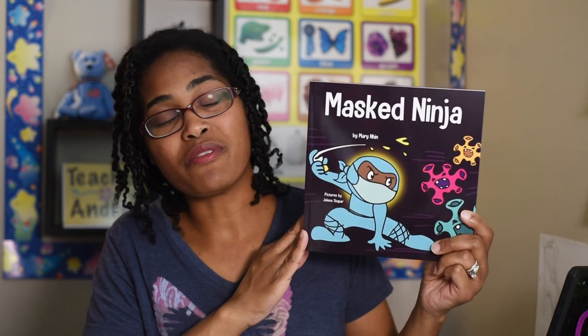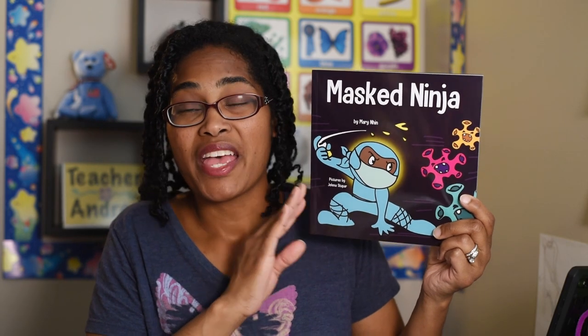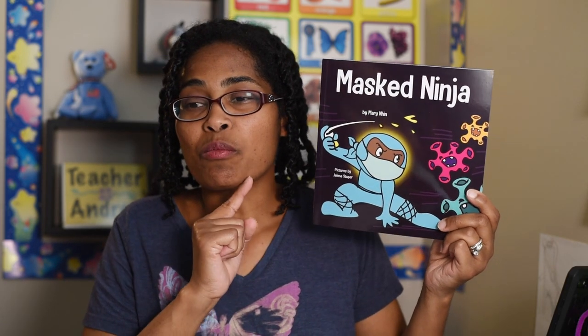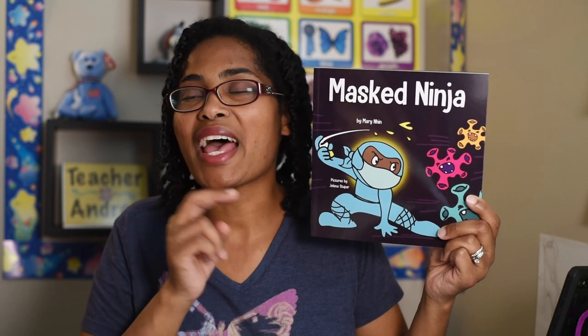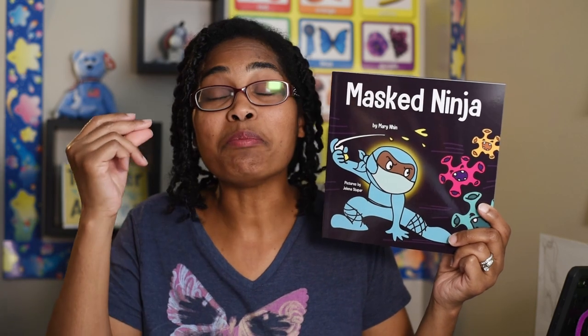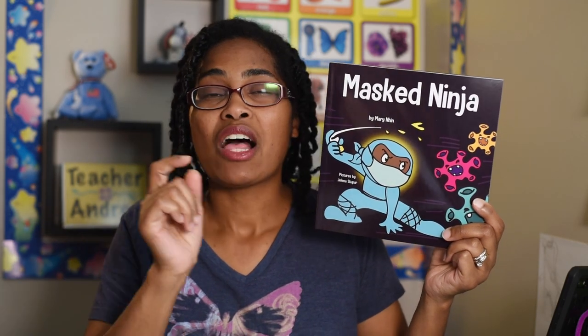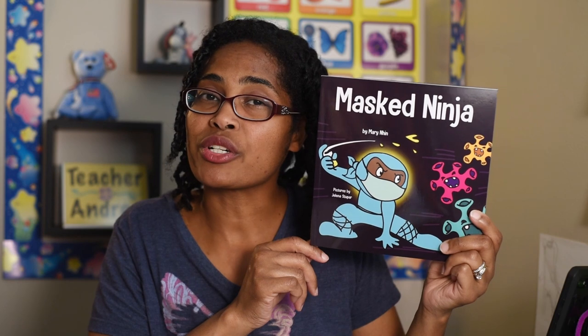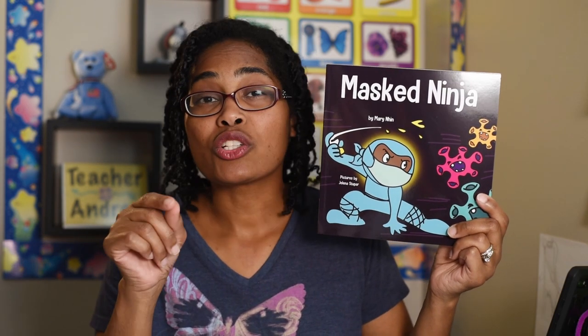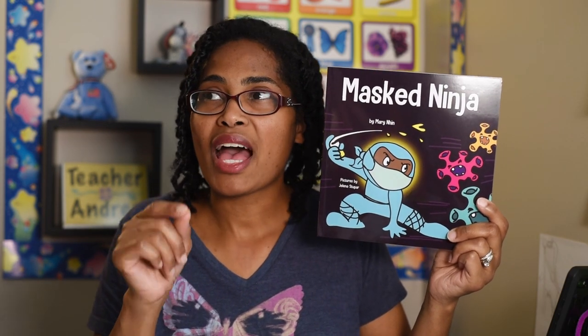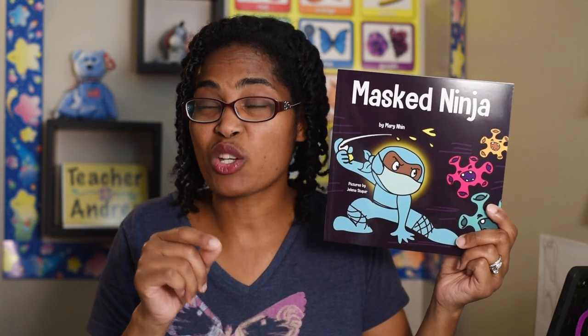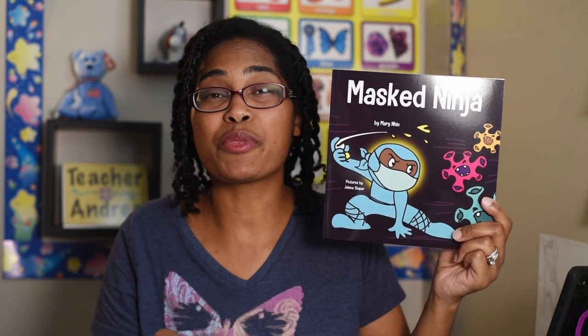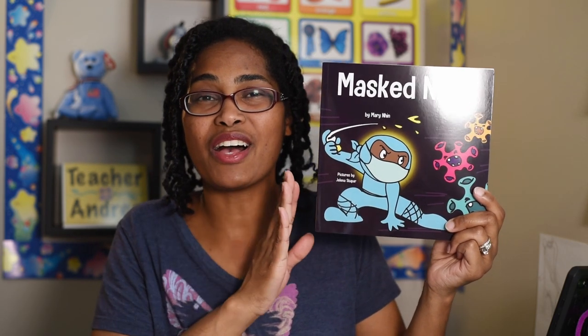Two great examples of text-to-media connections happened just today. The first one involves Mass Ninja. This book is about learning how colds and viruses happen and how to stay safe. The student immediately thought of the show Curious George and how George learned about how the man in the yellow hat got his cold and how to stop the spread.